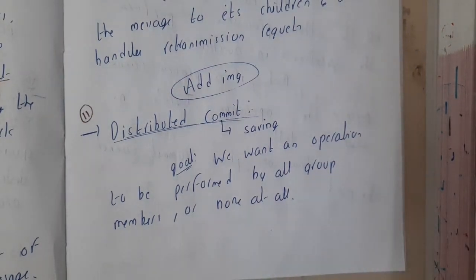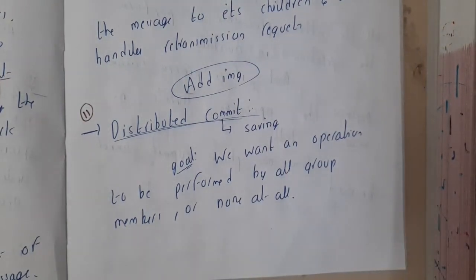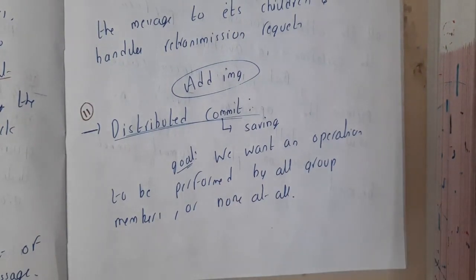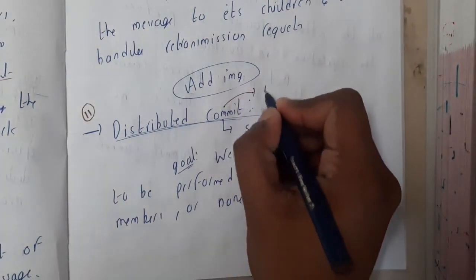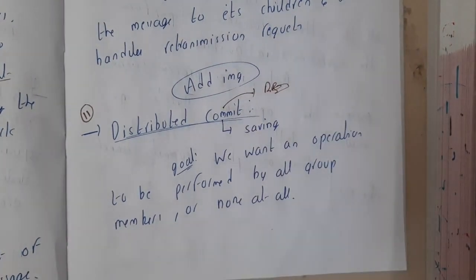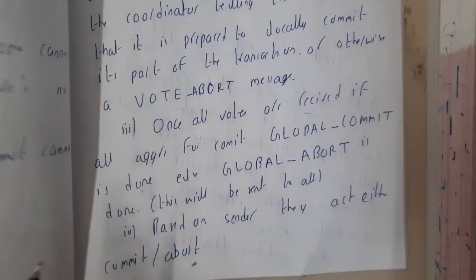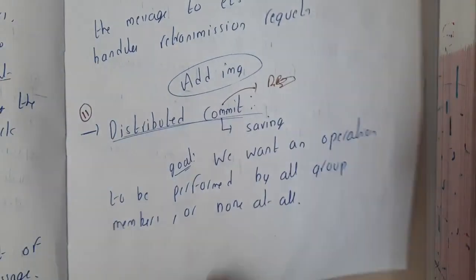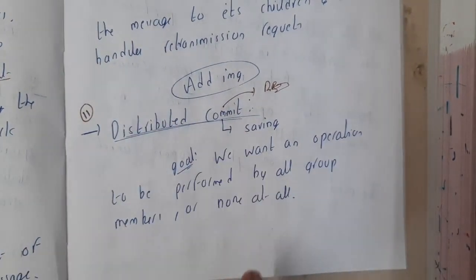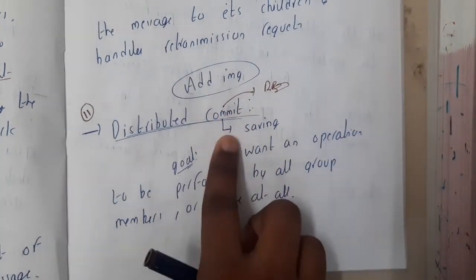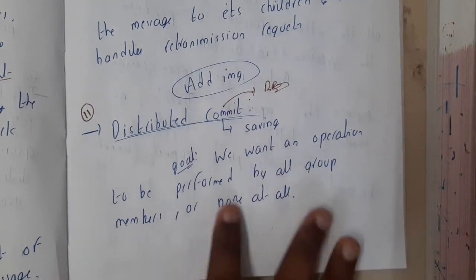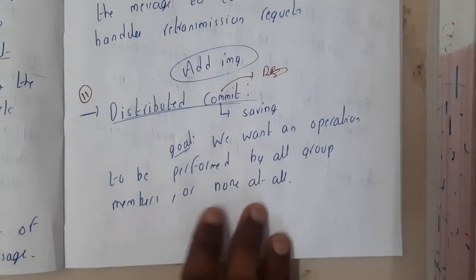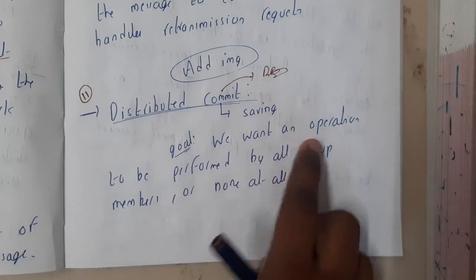Hello guys, we are back with our next lecture. In this lecture, let us go through the concept of distributed commit. In database management system we discussed the concepts of commit. The logic is the same here also. Distributed commit — commit is nothing but saving the data, finalizing the saving of data. The goal here is that we want an operation to be performed by all the group members or by none.